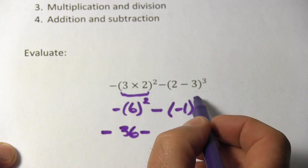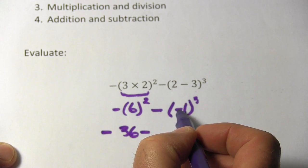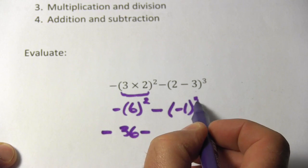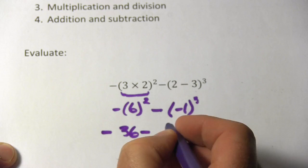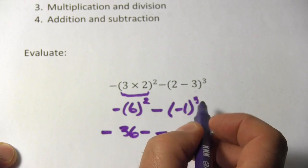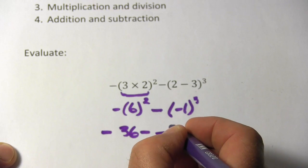then I have minus, and here the negative sign is inside the parentheses, so since this is an odd power that negative sign is going to stay, and then 1 to the third power, well that's 1 times 1 times 1, or just 1.